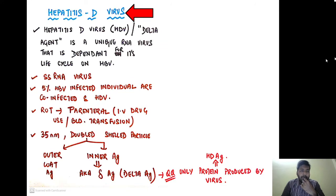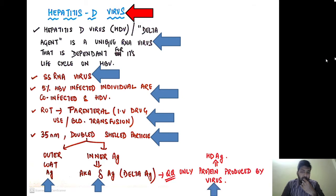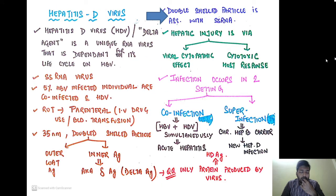First we are going to see hepatitis D. The hepatitis D virus is also called the delta agent. It is a unique form of a single-stranded RNA virus that is dependent for its life cycle on hepatitis B virus. Around 5% of HBV-infected individuals are co-infected with hepatitis D virus. The route of transmission is parenteral — IV drug use or blood transfusion. It is a 35-nanometer double-shelled particle with an outer coat antigen and an inner delta antigen, which is the only protein produced by the virus. The double-shelled particle is associated with a single-stranded RNA. Hepatic injury occurs via both the viral cytopathic effect and cytotoxic host response.